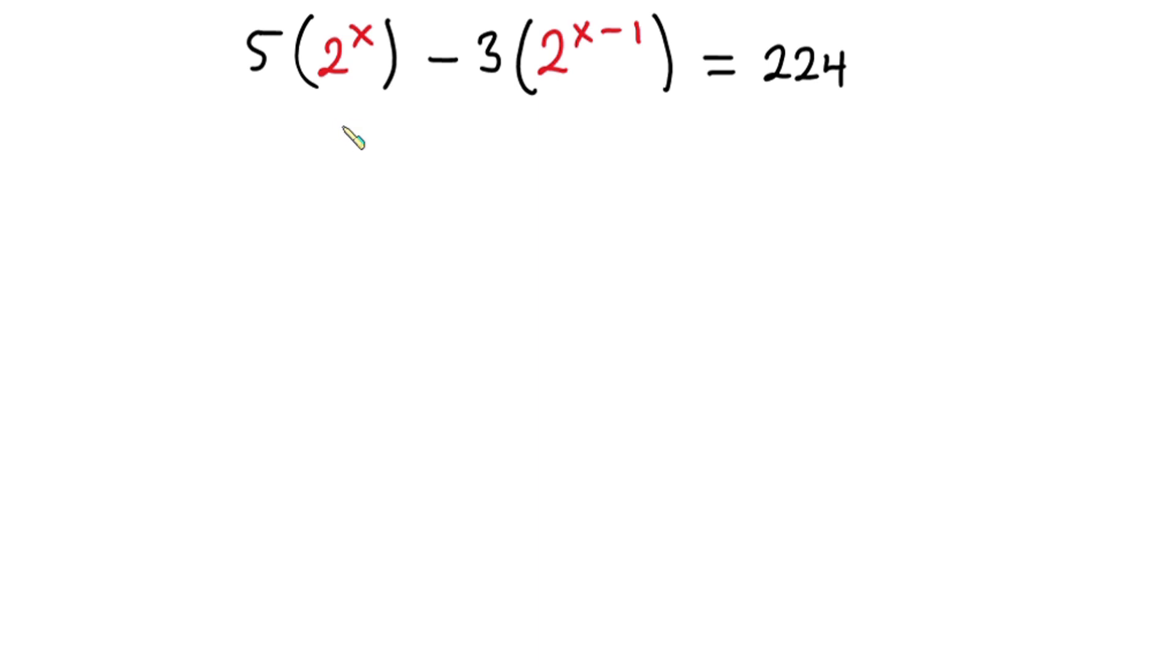Now let's get started. We have 5 times 2 to the power x minus 3 times, you can write what is in the parenthesis as 2 to the power x times 1 over 2, and this is equal to 2 to the 4th.